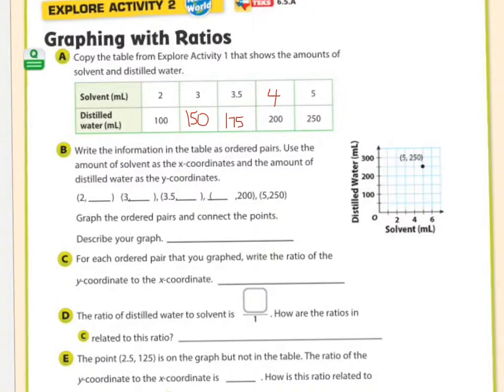So write the information in the table as ordered pairs. Use the amount of solvent as the x-coordinates and the amount of distilled water as the y-coordinates. These are your x numbers across the x-axis, and these are your y numbers across the y-axis. And remember, in the alphabet, w, x, y, and z, x comes before y. So when you look at these little ordered pairs, x represents the first number, and y represents the second number.